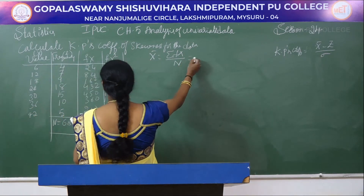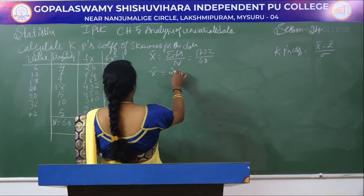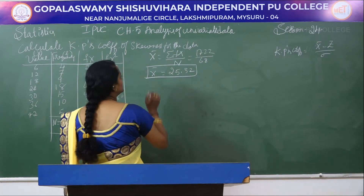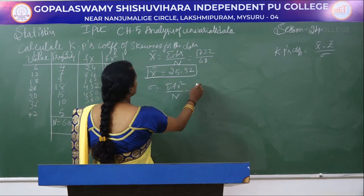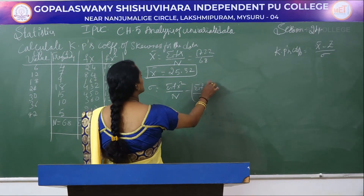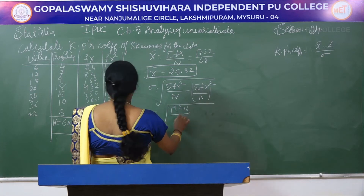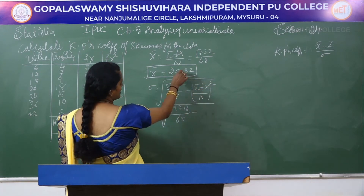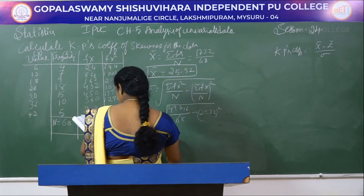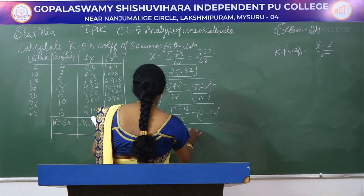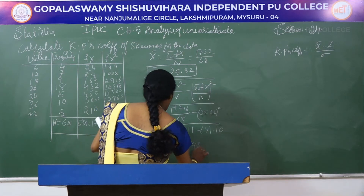So x̄ = 1722 / 68 = 25.32. Next, find sigma: σ = √(Σfx²/n − (Σfx/n)²) = √(49716/68 − (25.32)²) = √(731.11 − 641.10) and sigma is equal to 9.487.